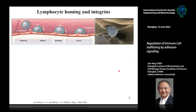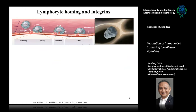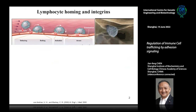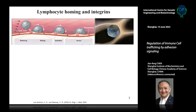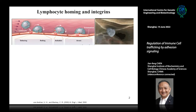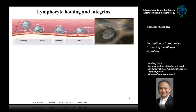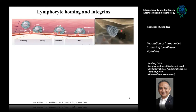Lymphocyte homing is very critical for immune homeostasis. During the lymphocyte homing process, the lymphocytes will start to tether on the blood vessel wall, then they start to roll. When they receive some activation signal like chemokines, the chemokines will induce the activation of the integrins on the surface of the leukocytes. Then the leukocytes and lymphocytes will stop rolling and form a firmer arrest on the blood vessel wall. Then the cells will change their shape and migrate and transmigrate across the blood vessel into either the lymph node, the tissue, or the site of inflammation.